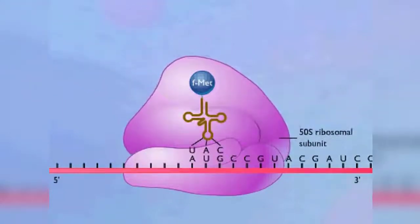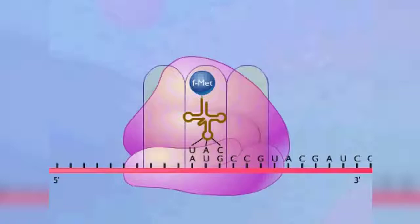Proteins called initiation factors are also involved, but are not shown. The 70S ribosome has two sites to which transfer RNA-carrying amino acids can bind.